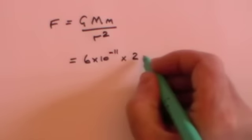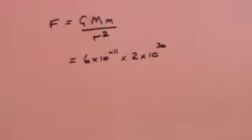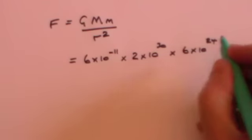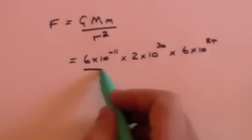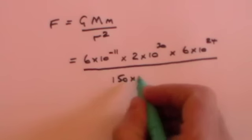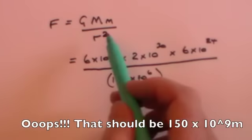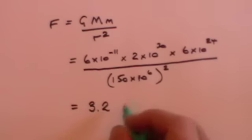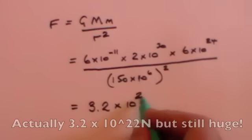Now we need the mass of the Sun — that's 2 times 10 to the 30 kilograms. And we need the mass of the Earth — that's 6 times 10 to the 24 kilograms. But we've got to divide that by the distance between the two squared. The distance between the Sun and the Earth is about 150 million kilometres, so that's 150 times 10 to the 6 kilometres, but that's got to be squared because it's r squared. It's quite a complicated calculation, but if you work it out carefully with your calculator, I think you'll get the answer 3.2 times 10 to the 28 newtons.